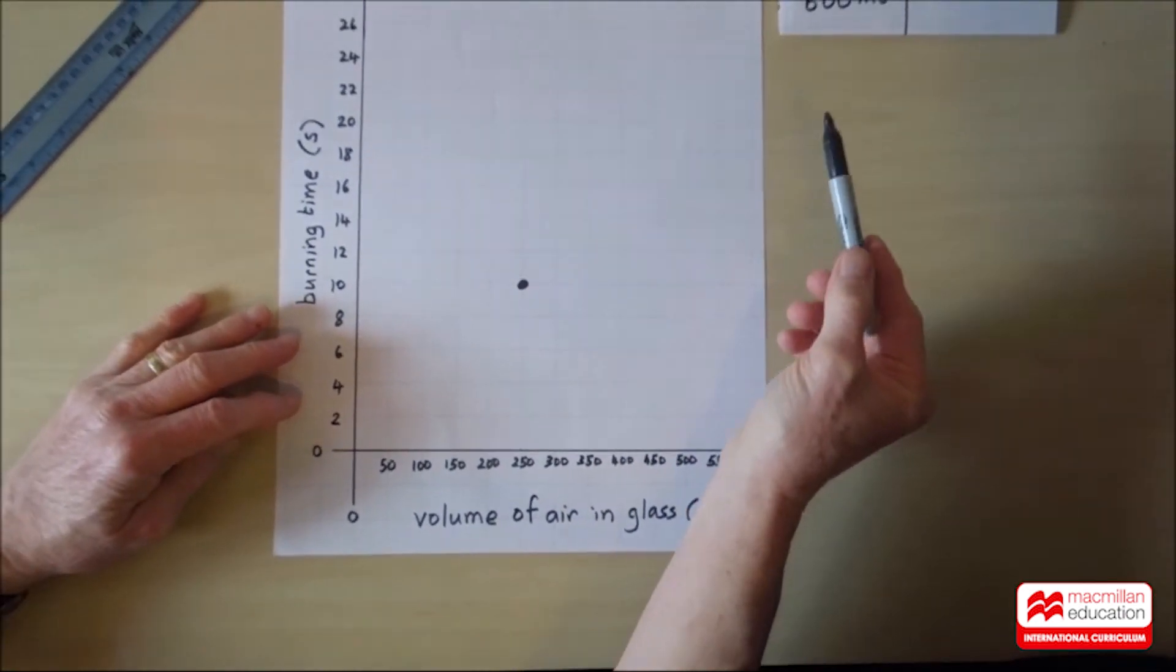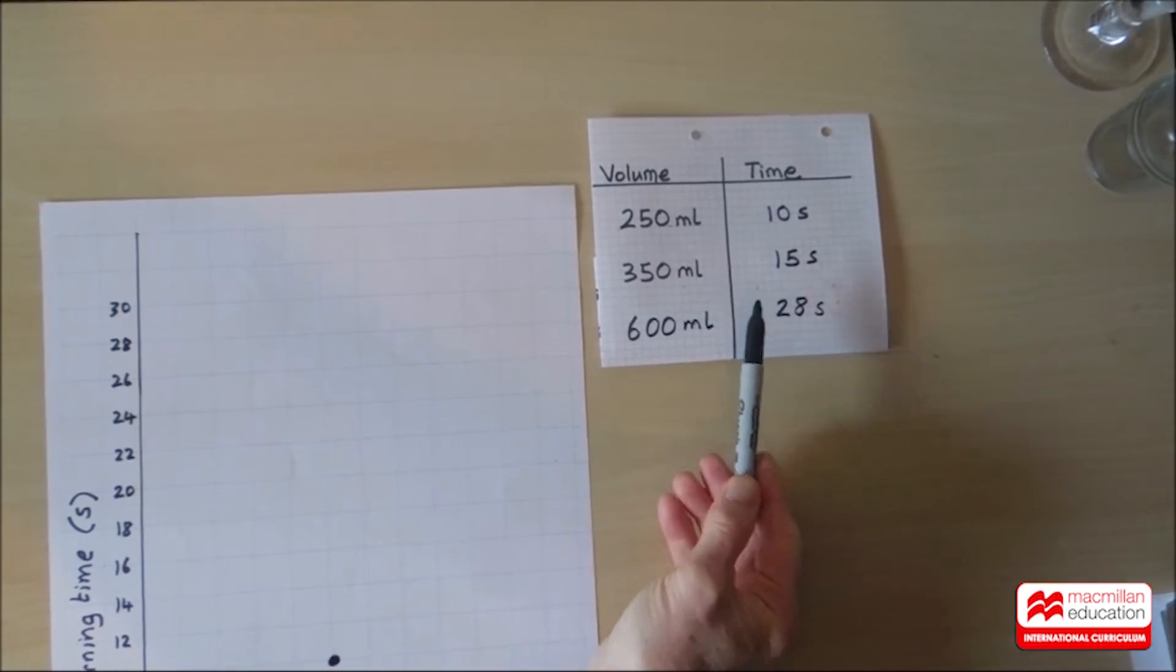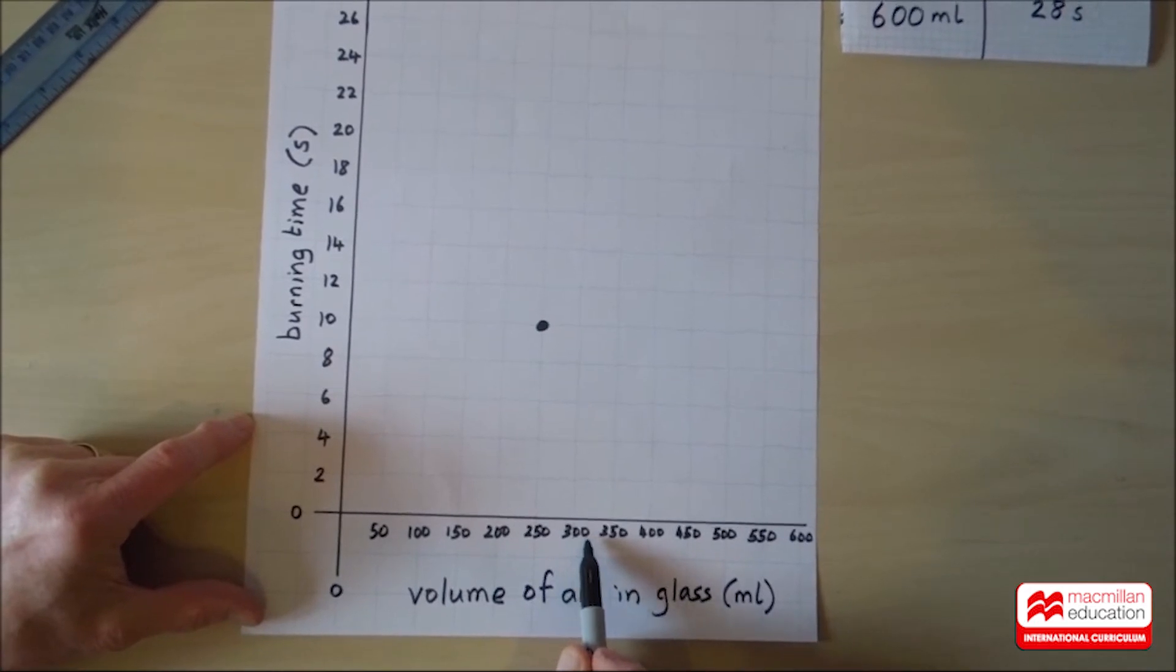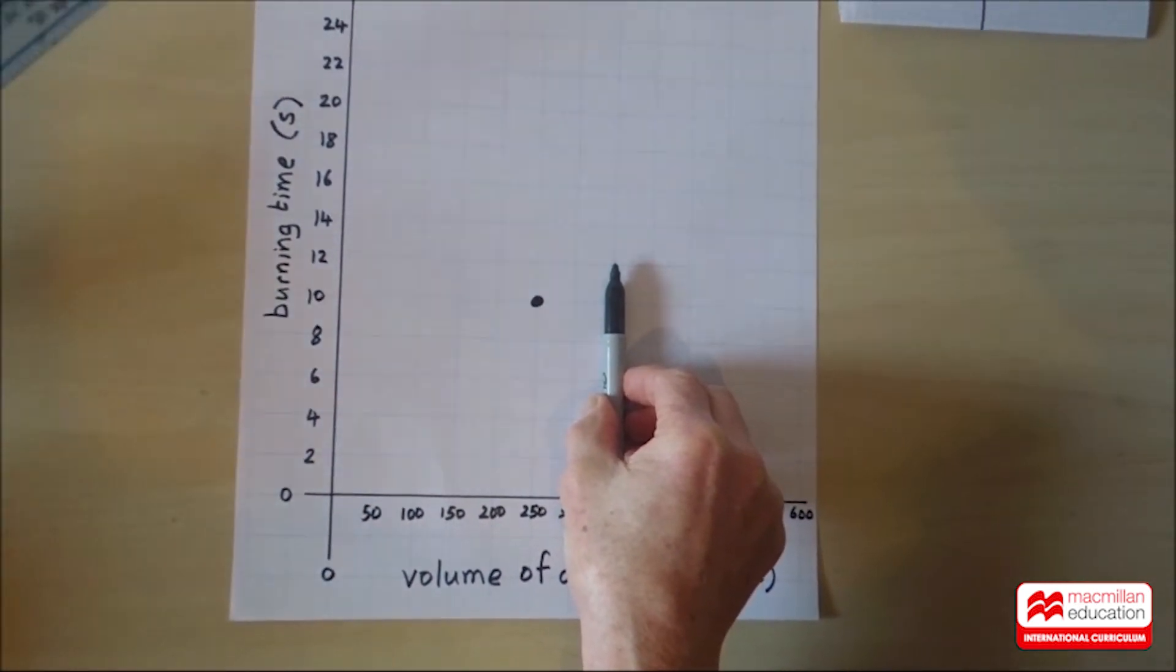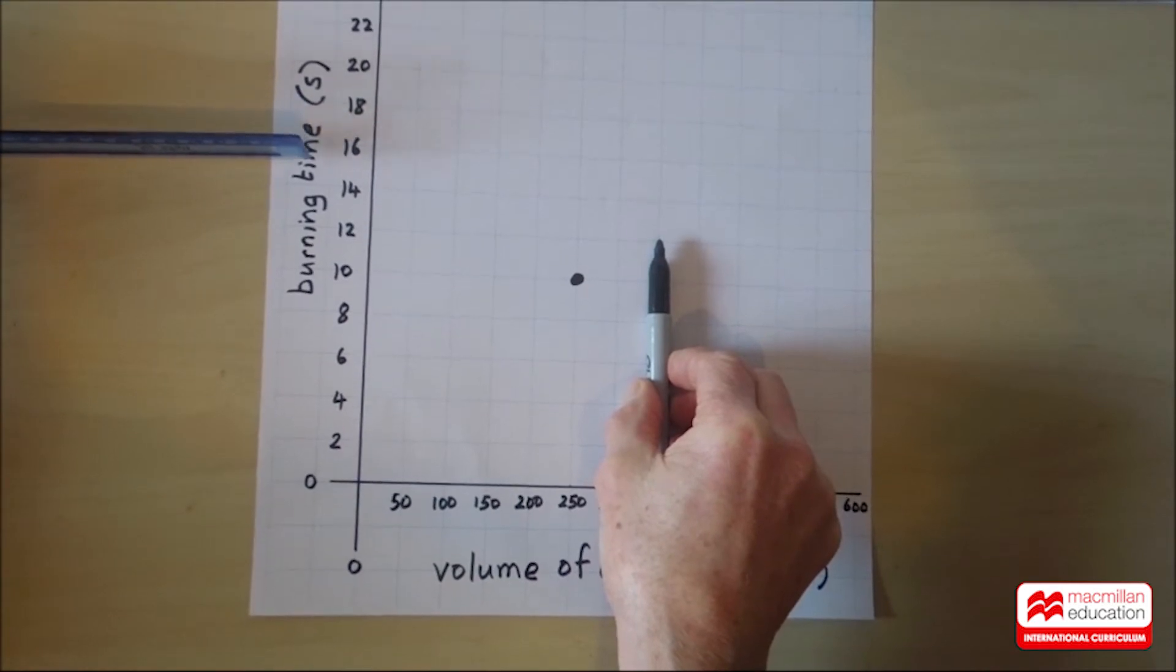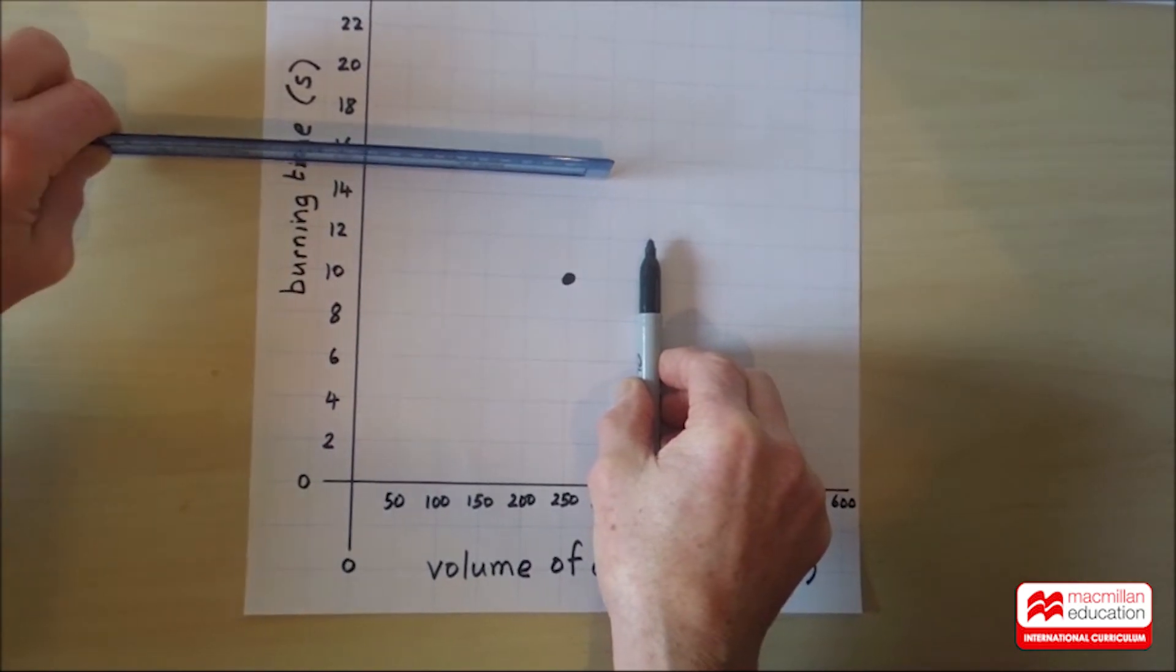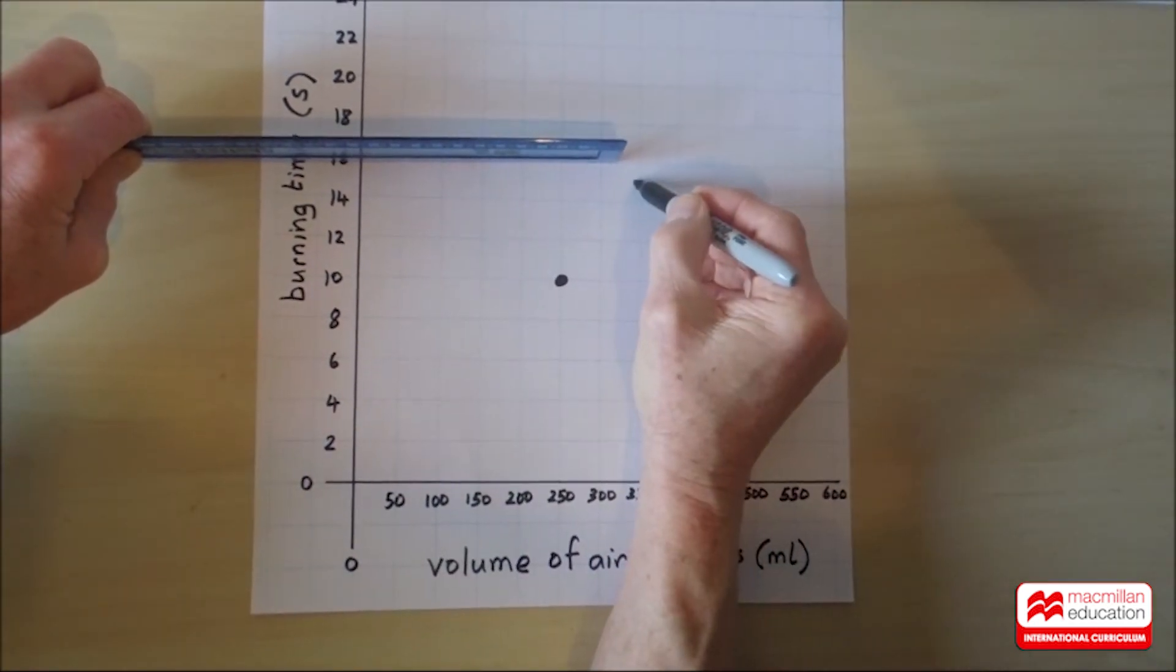Let's do the second one. A volume of 350 mils took 15 seconds. So back to the graph. Let's find 350 mils. It's bigger than 300. Here it is, 350 mils. And here's its line. And now I'll find the line for 15 seconds. 6, 8, 10, 12. Well, there isn't 15. But what can we do? We can imagine that there's a space in between 14 and 16, and that's where 15 lives. So 15 will be along here, halfway along. And its line is there, and it meets the 350 mil line. And here's the point, our second data point.